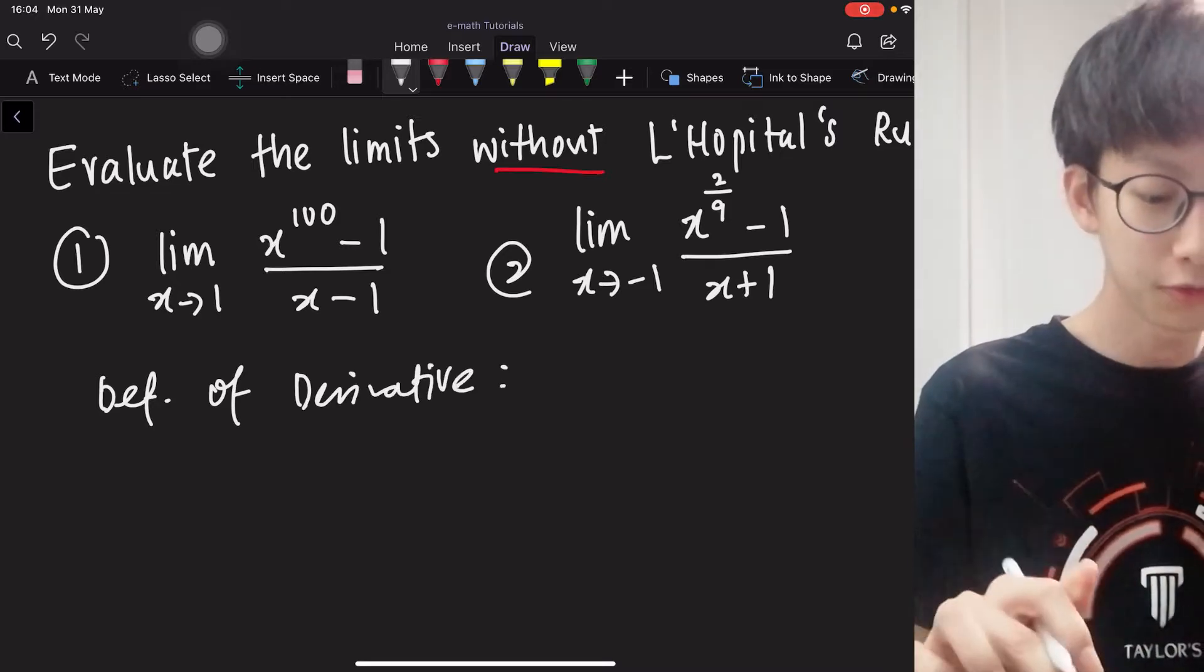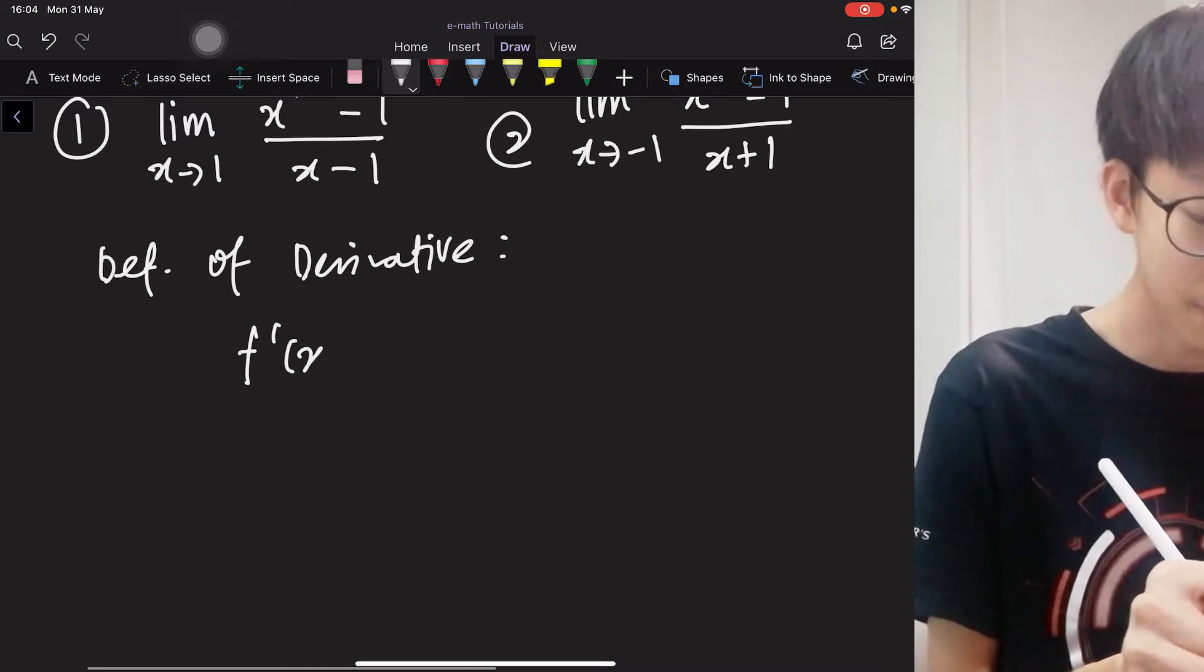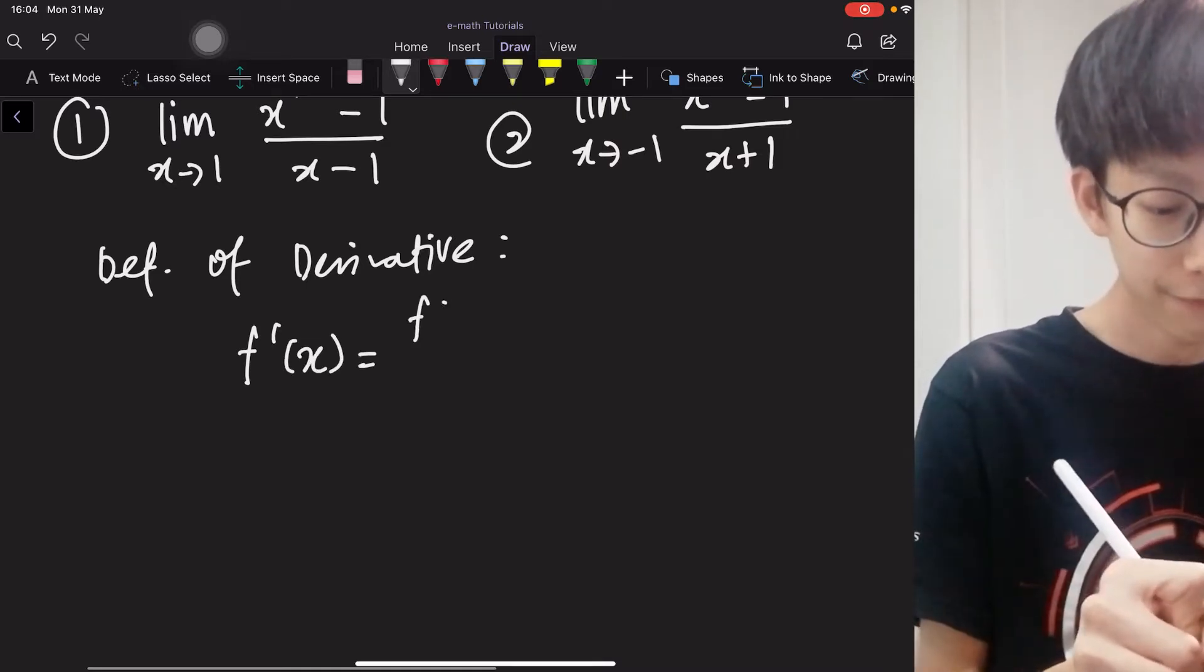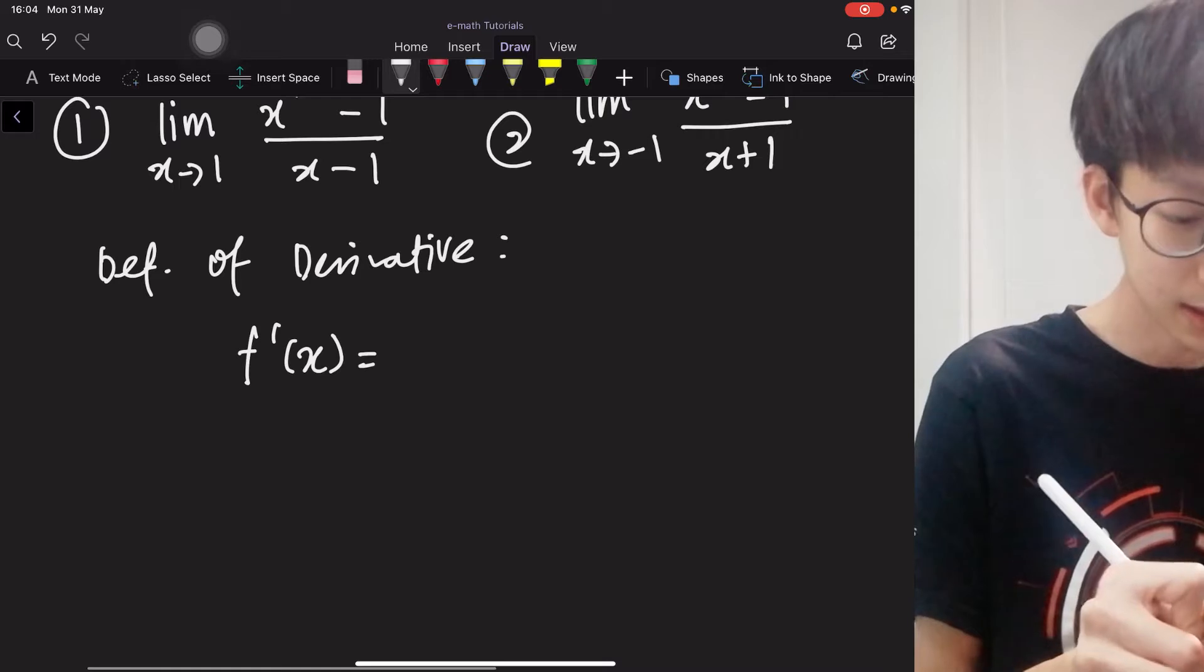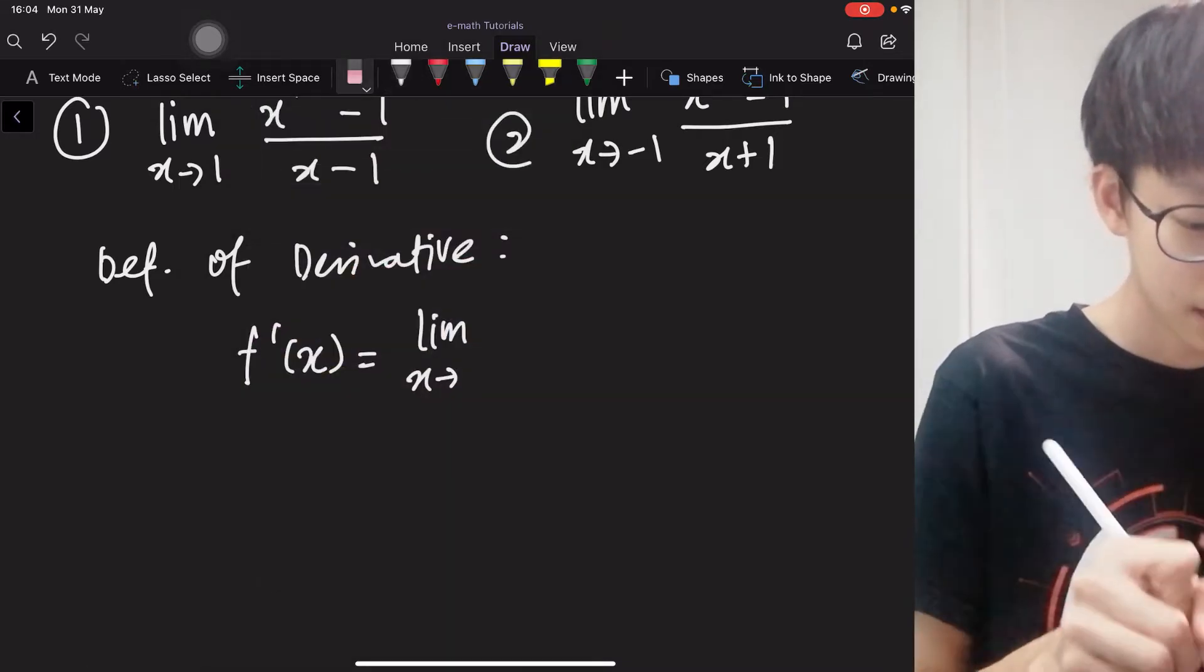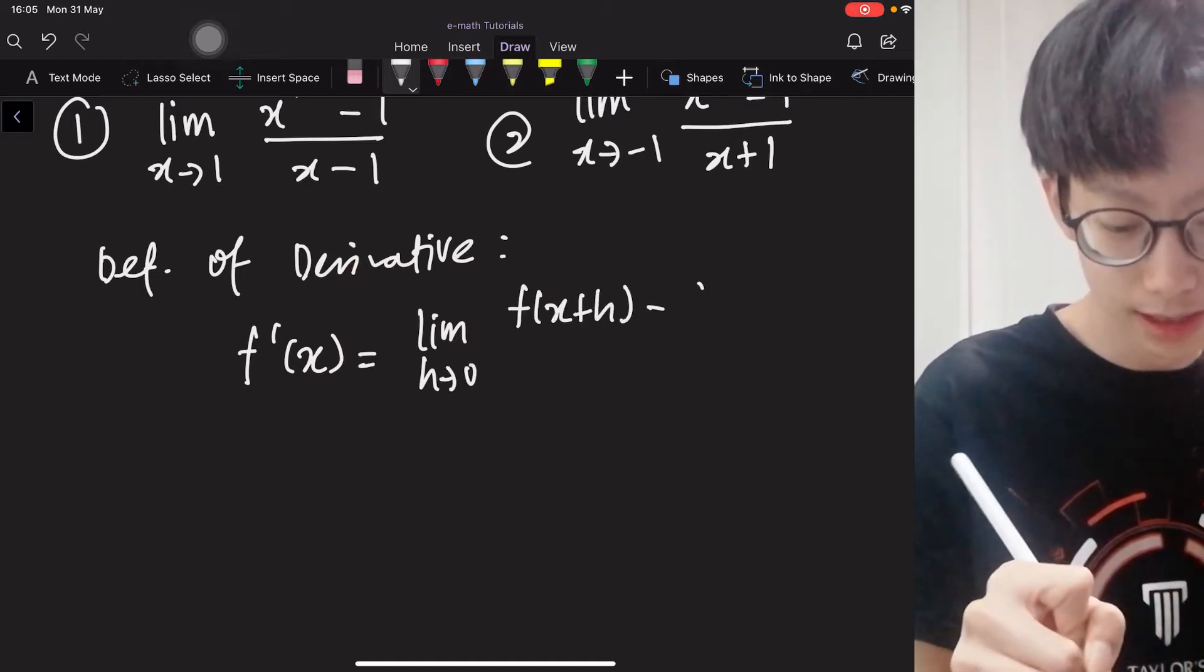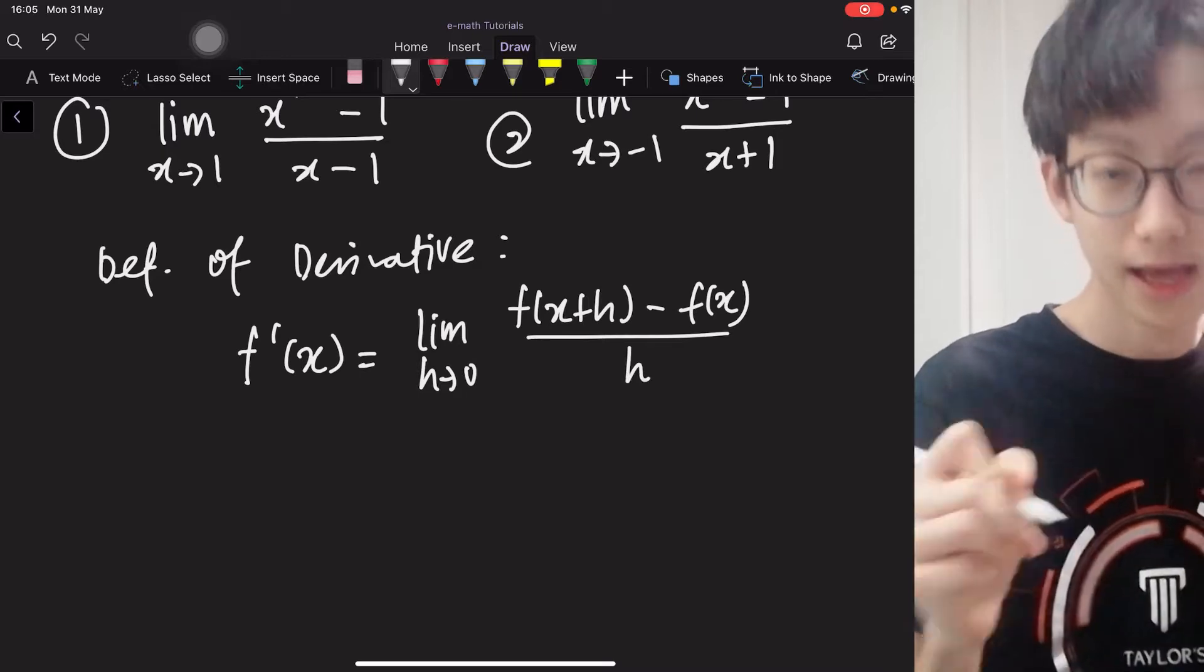So most of the book will write like this. The derivative function f'(x) is given by the limit as h approaches 0 of f(x+h) minus f(x) over h.